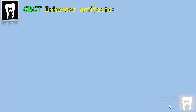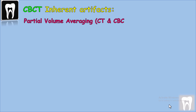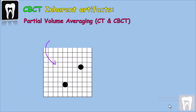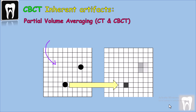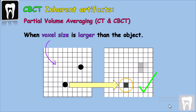Partial volume artifact: this artifact is seen in both CT and CBCT. When one soft tissue type is present in a single voxel, the density displayed shows the exact density of that soft tissue. However, when the voxel size is larger than the object, different tissue densities are present in one voxel, and the final density displayed will be an average — not showing the real density of any single tissue.